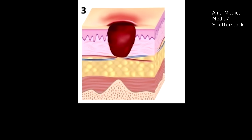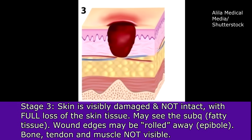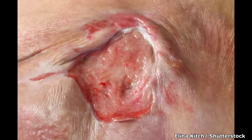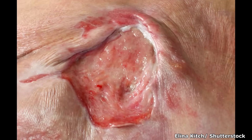Stage three: the skin is visibly damaged and not intact, with full loss of skin tissue. You may see the subcutaneous fatty tissue, which will appear yellowish or white in the wound bed. The wound edges can be rolled away — called epibole. The important distinction for stage three is that you will not see bone, tendon, muscle, or ligament — those will not be visible. Here is an example of a stage three, with wound edges that have begun to roll away.